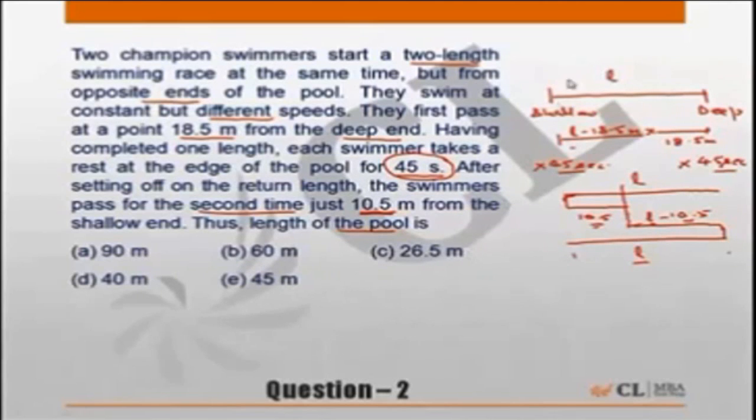Now since the speeds are different and we know speed is proportional to the distance, so the faster person will cover greater distance and the slower person will cover lesser amount of distance. Now if the person who started from the shallow end is A and the person who started from the deep end is B, then we can say ratio of speed of A to speed of B should be equal to L minus 18.5 upon 18.5, which is nothing but the ratio of distance. The time in which the person from the shallow end covered L minus 18.5 meters, in the same time the other person from the deep end covered 18.5 meters.